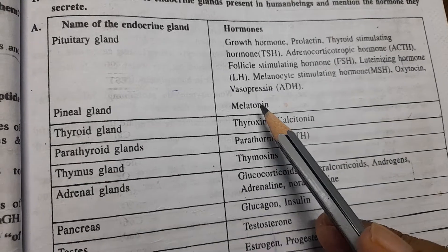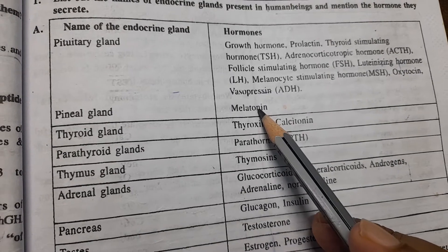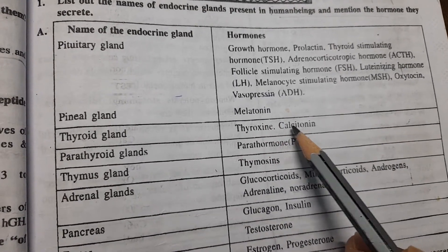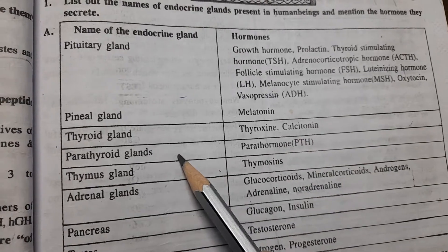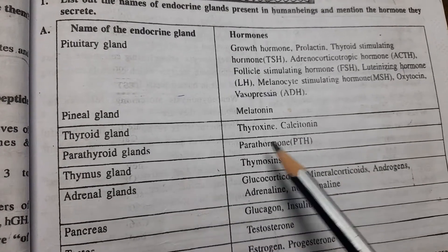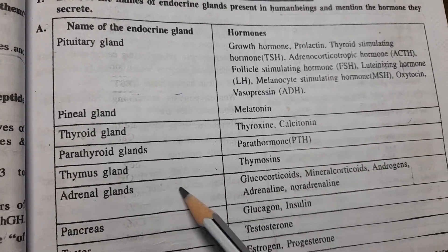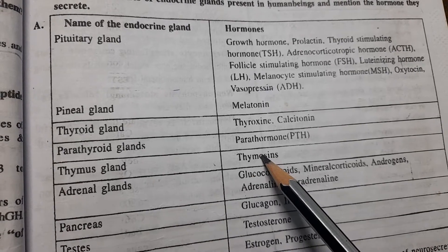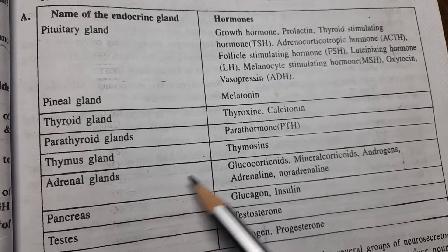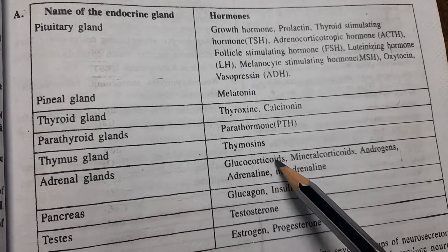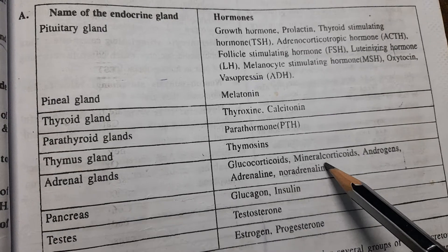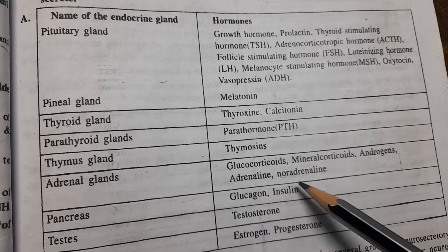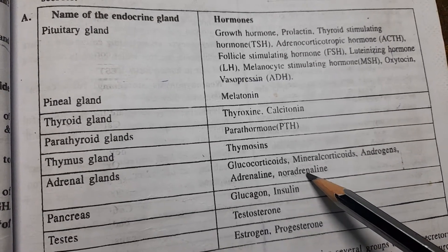Pineal gland secretes melatonin. Thyroid gland secretes thyroxin and calcitonin. Parathyroid gland secretes parathormone (PTH). Thymus gland secretes thymosins. Adrenal glands secrete glucocorticoids, mineralocorticoids, androgens, adrenaline, and noradrenaline.